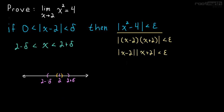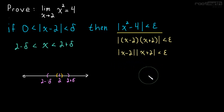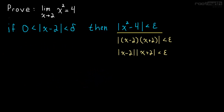Knowing that, what happens if we force the absolute value of x minus two to be really small? That means x is really close to two, and when x is really close to two, what happens to the x plus two term? Well, that gets really close to four. If x is close to two, x plus two is close to four. So it seems like x plus two isn't going to be getting really big, and so we won't really have a problem with that term. What we can do more formally is just find an upper bound for x plus two — meaning we find out it's never going to be bigger than some number — and work with that.